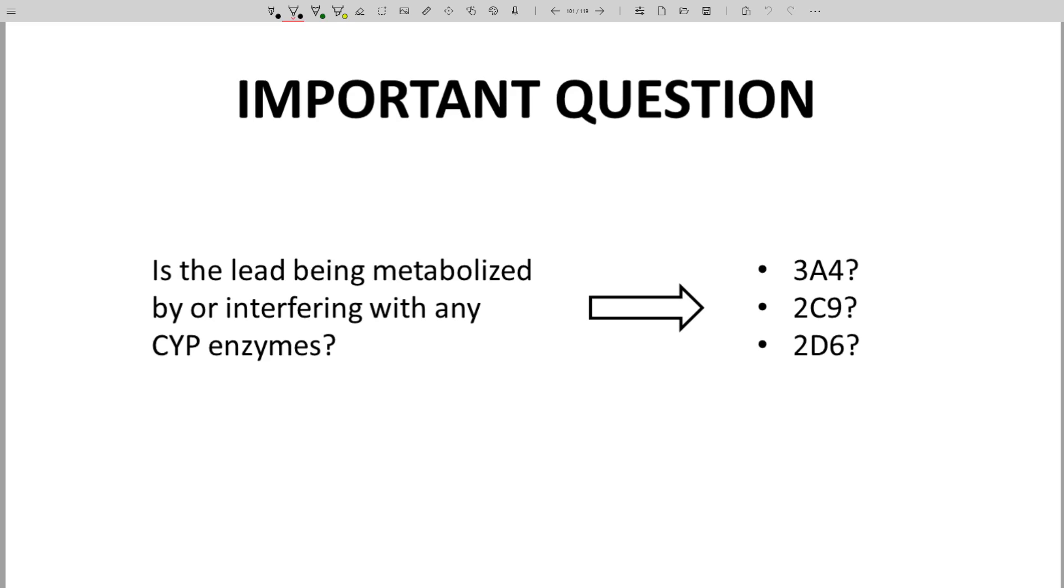To simplify the discussion, let's focus on three of the most important CYP isoforms in drug metabolism: CYP3A4, 2C9, and 2D6. And let's rely on the microsomal stability assays we mentioned in a different video.